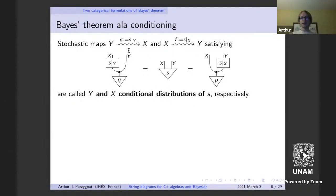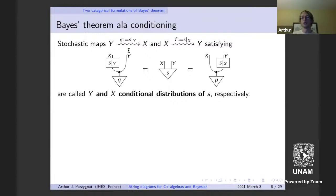The second version says: if you give me a joint probability distribution, I can find stochastic maps between X and Y and between Y and X such that a certain equality holds. These stochastic maps are called the conditional distributions. If you've seen probability theory before, this agrees with the notion of conditional distributions from random variables X and Y.